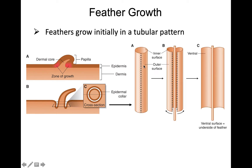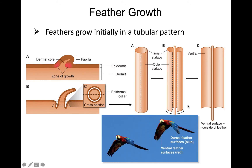As the feather grows out as a tube, that tube splits so that the rachis serves as the centerpiece, and the barbs split across from that. The inside becomes the ventral surface of the feather and the outside becomes the dorsal surface. In these macaws, the blue seen on the feathers is the dorsal part, which came from the outside of the tube, while the red inside came from the inside of the tube.